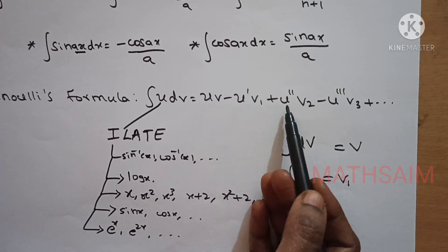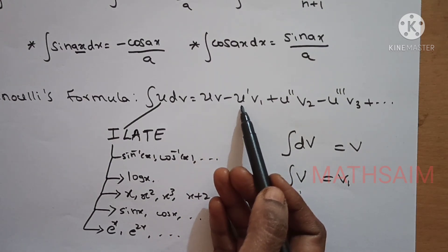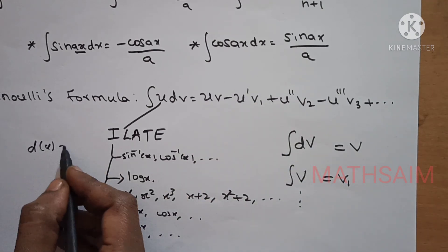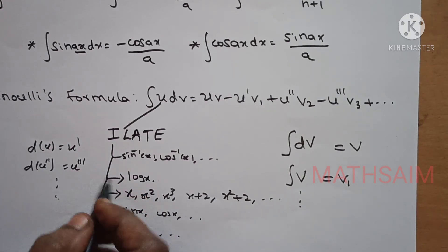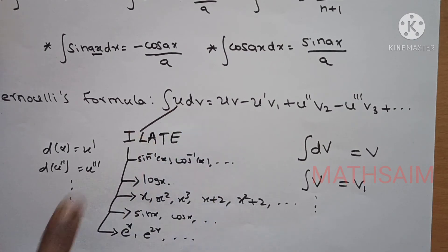And then, if we do u, we take u', u'', u''' — successive differentiation of u. U is the final number of derivatives, so u is differentiated at a particular stage. After a finite number of times, it becomes 0.